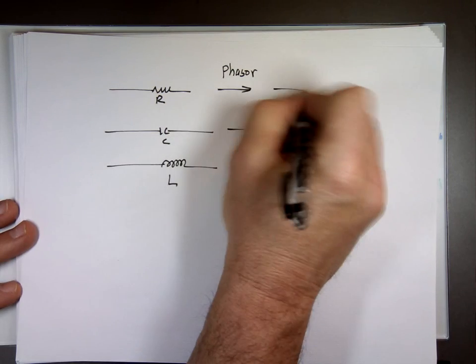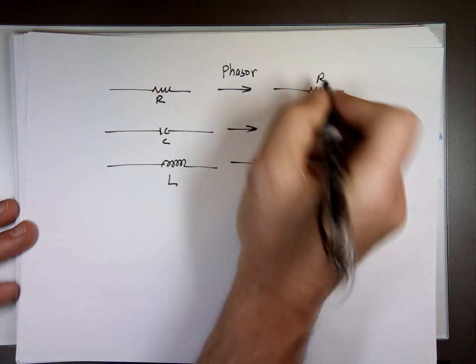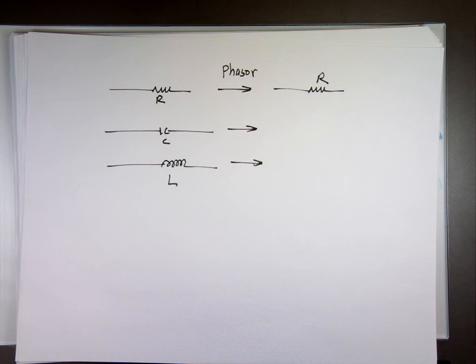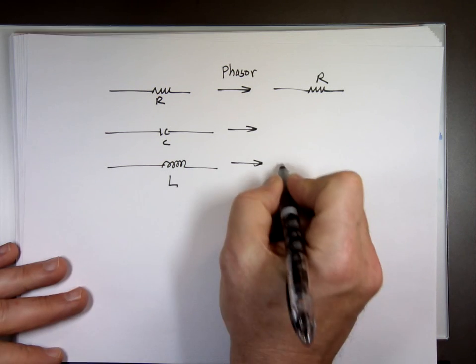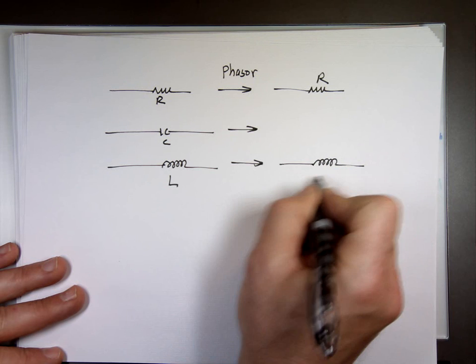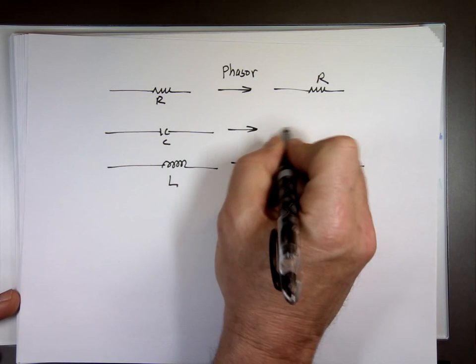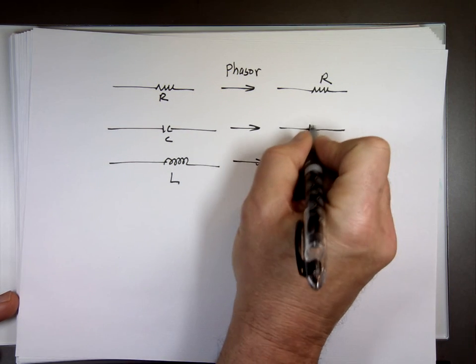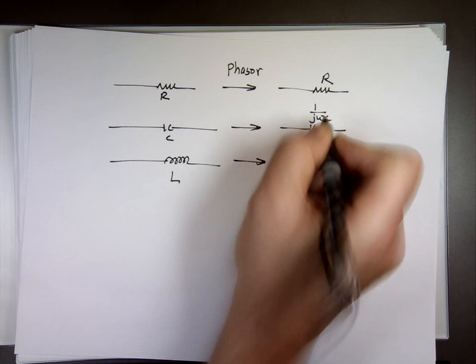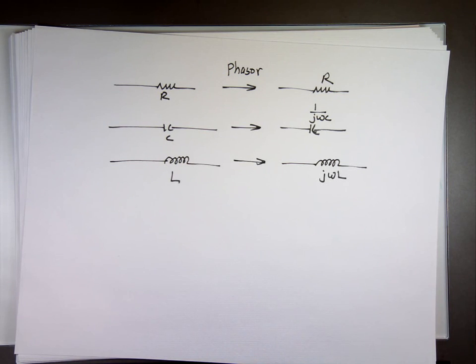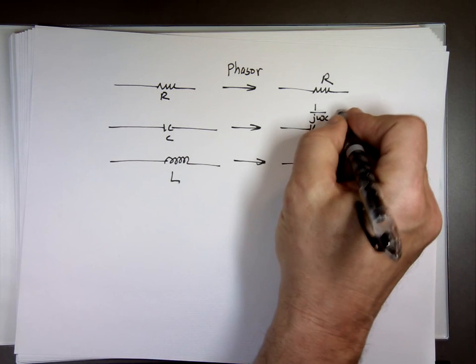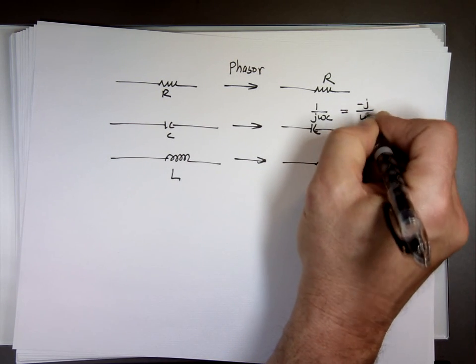When you change them to phasor, the resistor stays the same. I'll jump to the inductor. The inductor value becomes jωL. And the capacitor, 1 over jωC. Now, if you have a j in the bottom of a fraction, you can rationalize that. How do you rationalize it? You multiply the top and the bottom by j, which makes a negative j in the bottom, or j squared, which is a minus 1. So you end up with -j over ωC. So mathematically, that's the same as this.